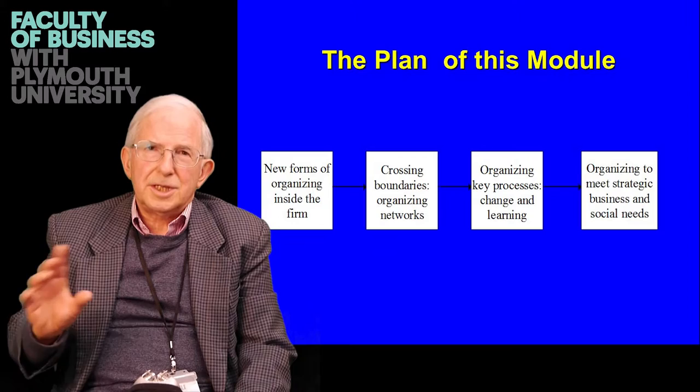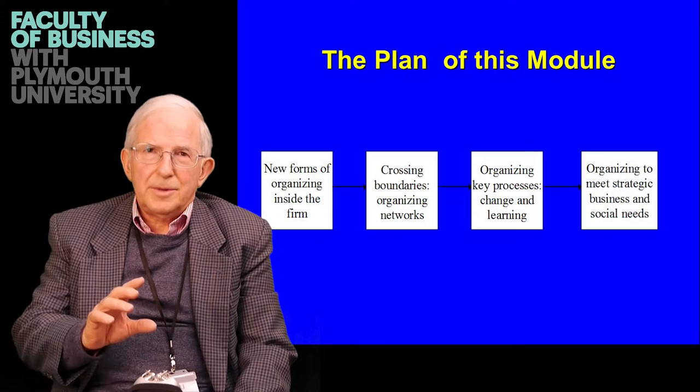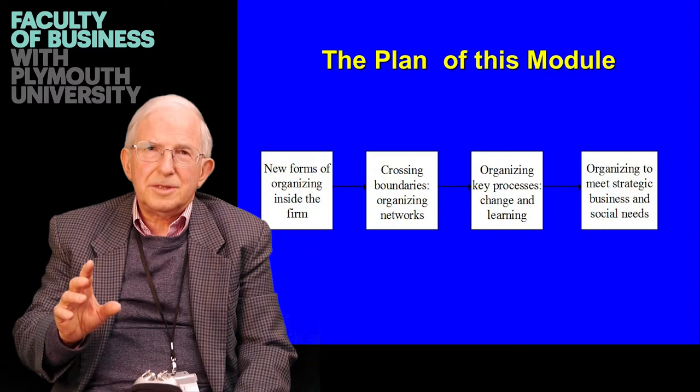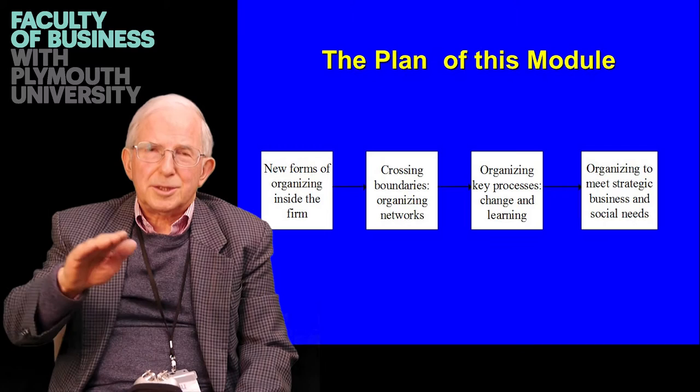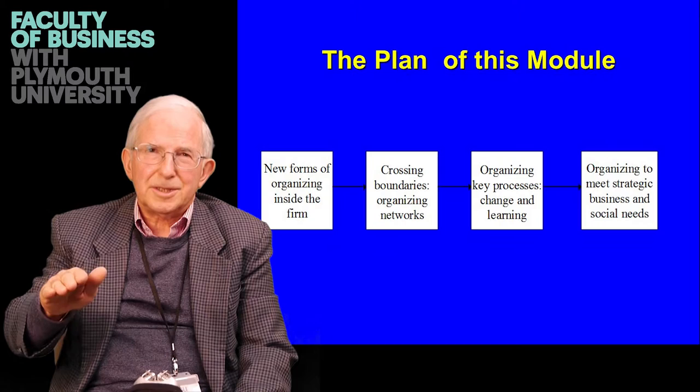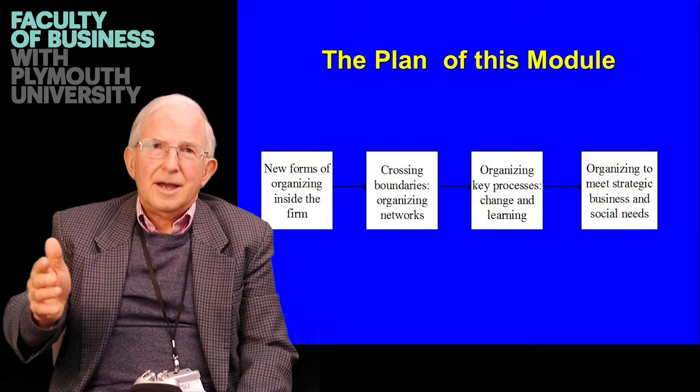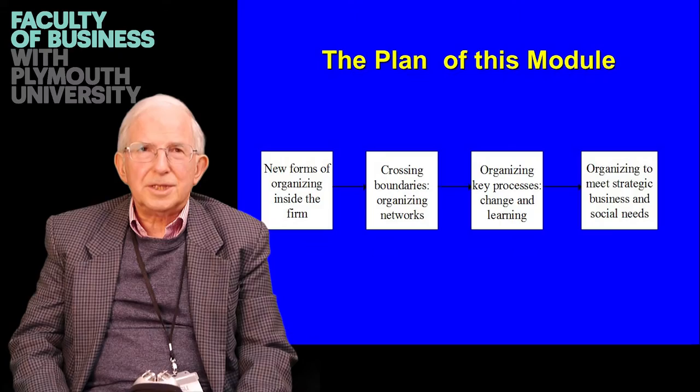Then the course ends up by saying: organisation can help your company meet economic performance objectives, but there are also social impacts. The way you organise people has a bearing on their psychological wellbeing, and for example if you organise with lots of levels between the top and the bottom, that has implications for income inequality and these kinds of social issues. So at the end of the course we look at how you can organise to reconcile these economic and social considerations.